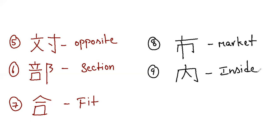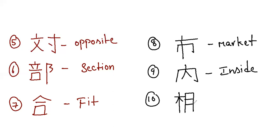Kanji ten. This is the kanji meaning together, inter, or mutual. It has four strokes. This is the kanji for mutual.